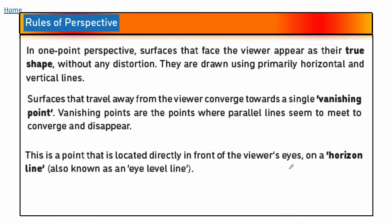Let's look at the rules of perspective. When focusing on one-point perspective, viewers can see objects as their true shapes without any distortion. They are drawn using horizontal and vertical lines. Objects converge towards the single vanishing point, making them look like they are disappearing. The closer you get to the vanishing point the smaller the object becomes, and when it reaches the vanishing point it is as if it has completely disappeared.